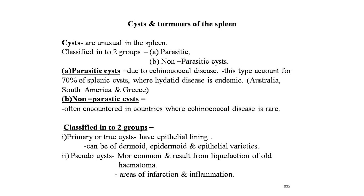The second type is non-parasitic cysts, often encountered in countries where echinococcal disease is rare. These cysts are classified into two groups: first, primary or true cysts, which have epithelial linings and can be of dermoid, epidermoid, and epithelial varieties; and second, pseudocysts, which are more common and result from liquefaction of old hematomas, areas of infarction, and inflammation.